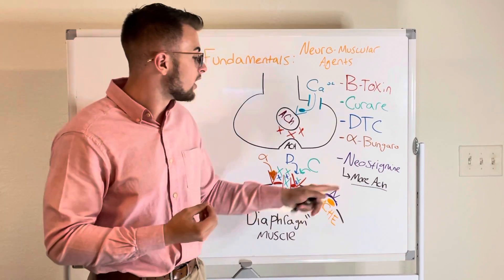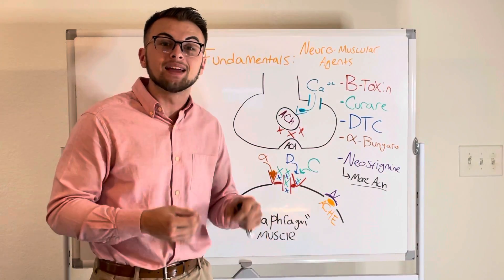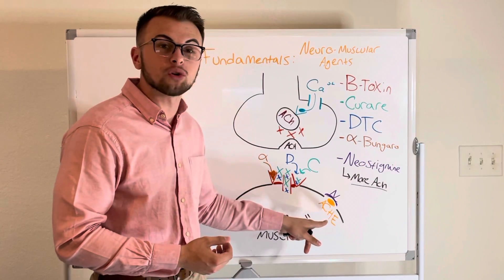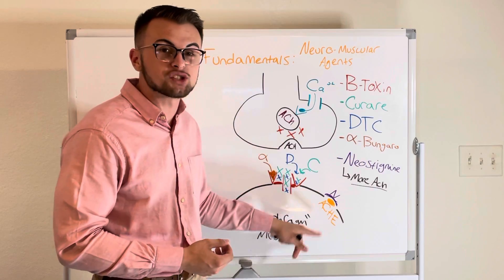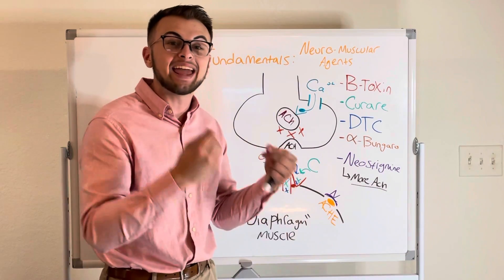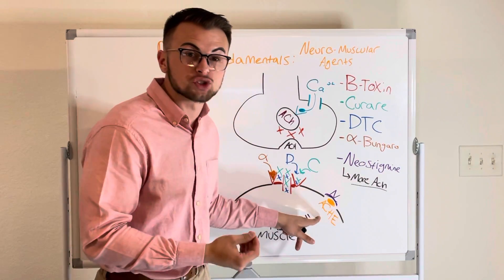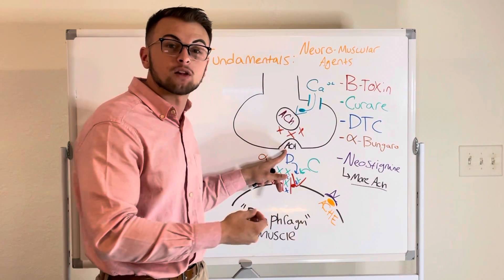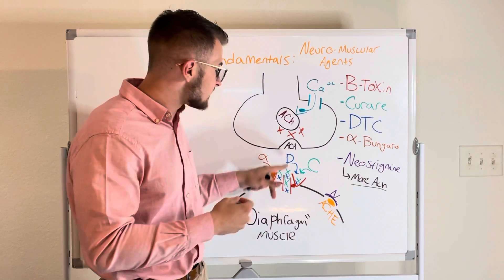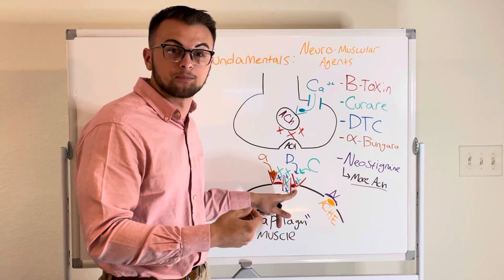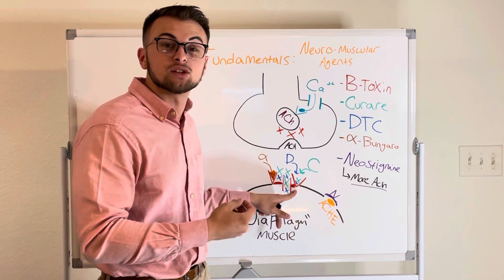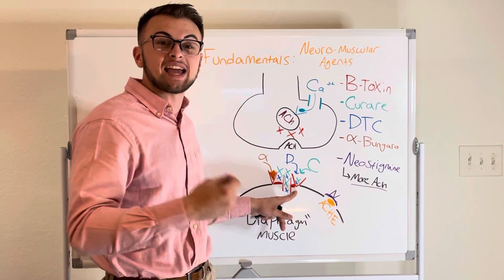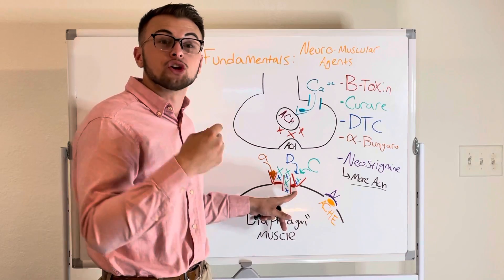We have neostigmine. Neostigmine inhibits our acetylcholinesterase — the eraser. If we inhibit the eraser, it means that more acetylcholine will be available to bind to our ACh receptors. This is why acetylcholinesterase inhibitors, or AChEIs, are used for the treatment of myasthenia gravis.